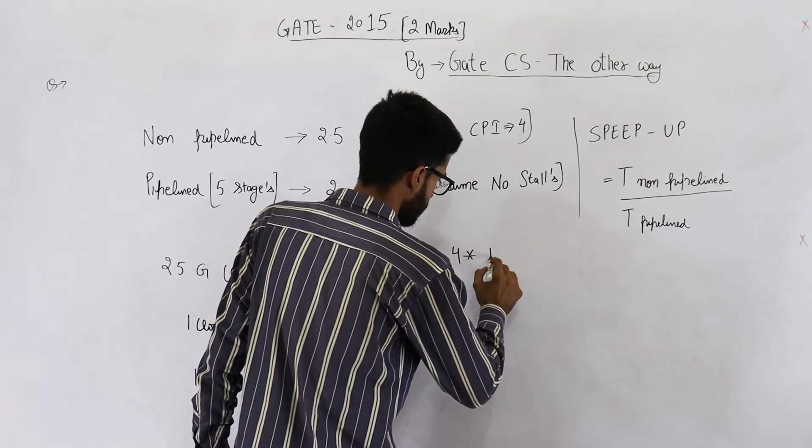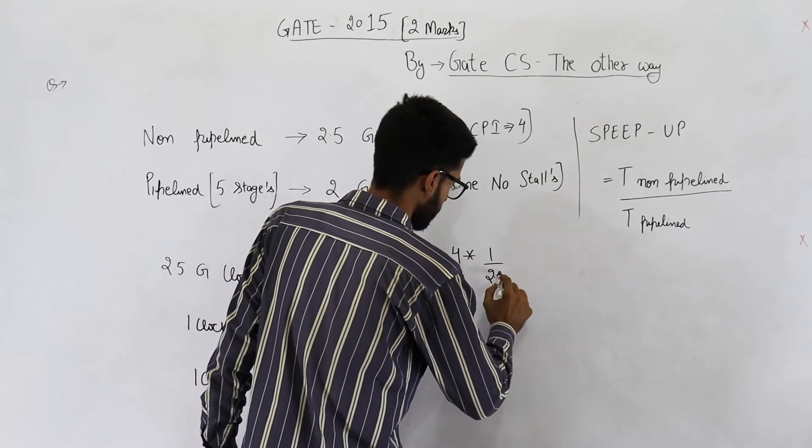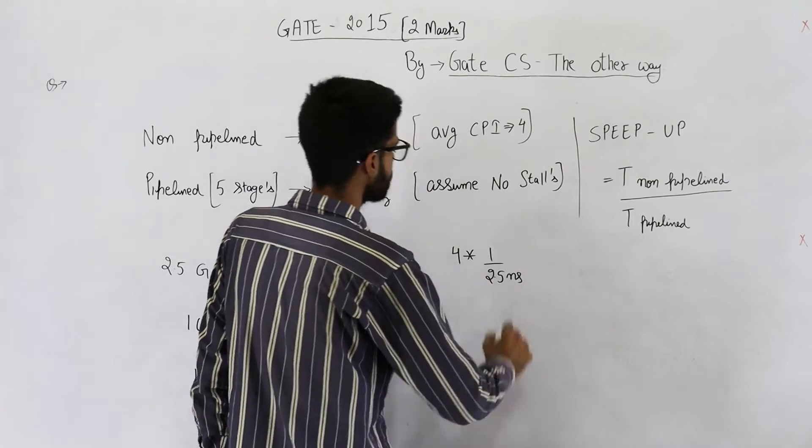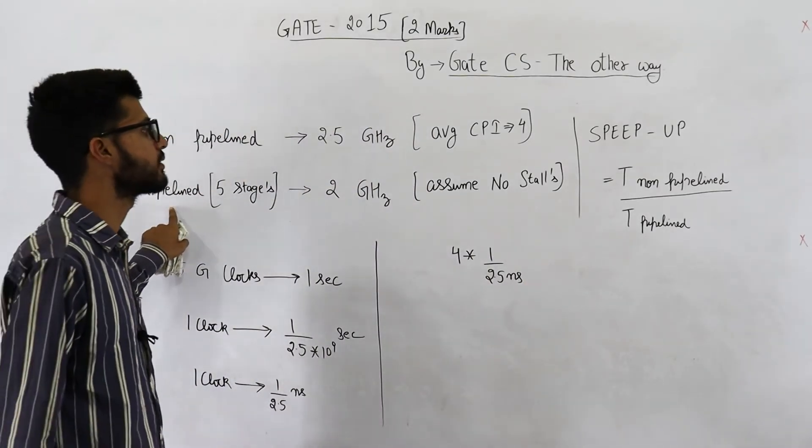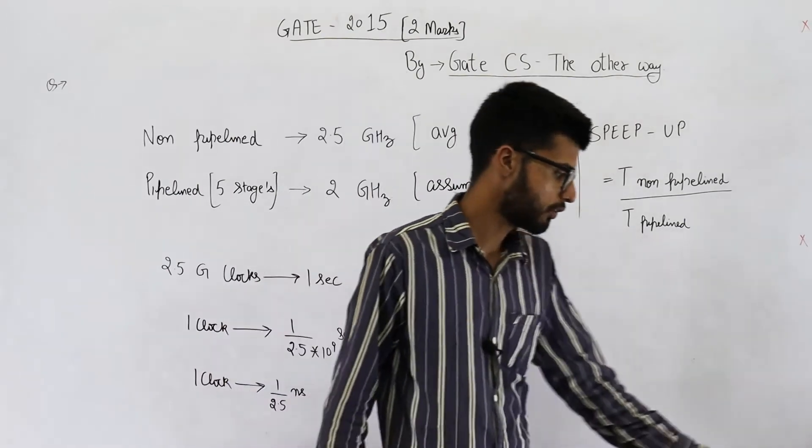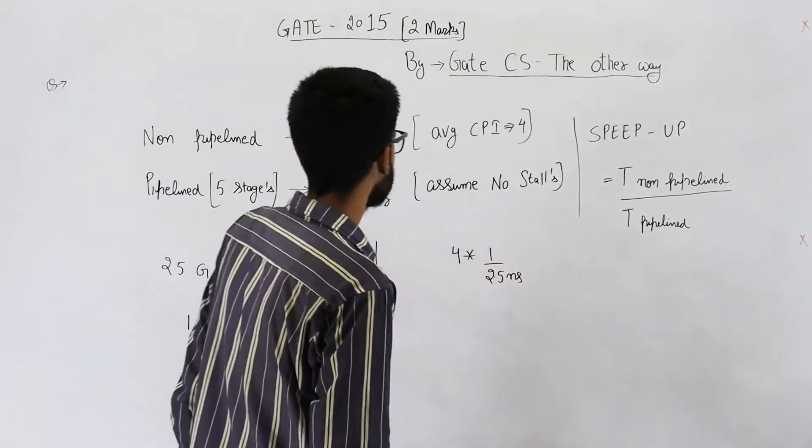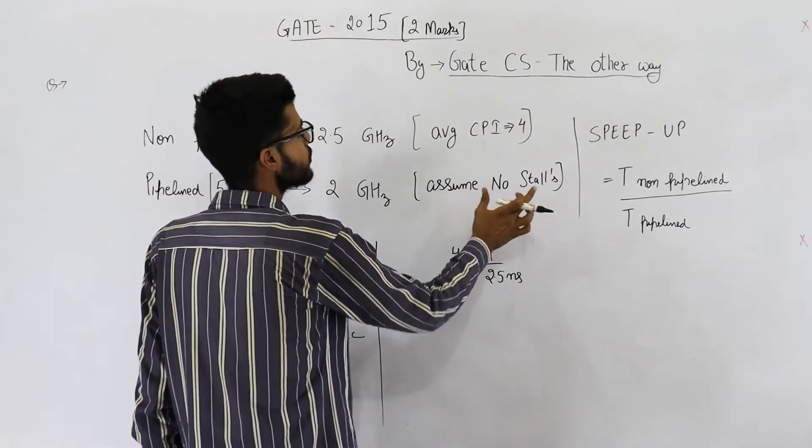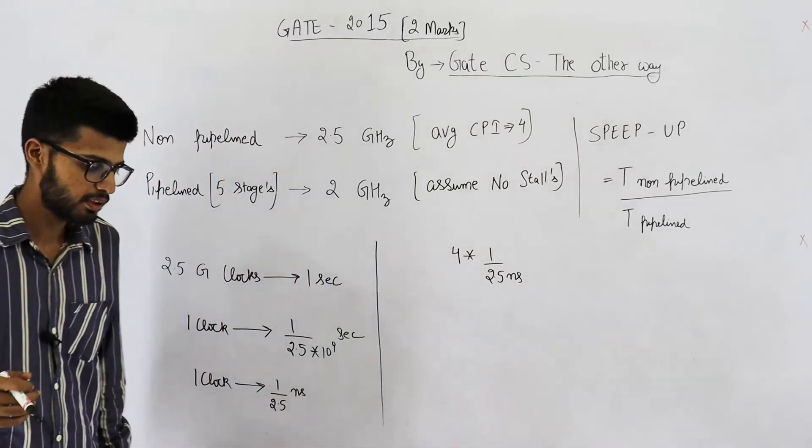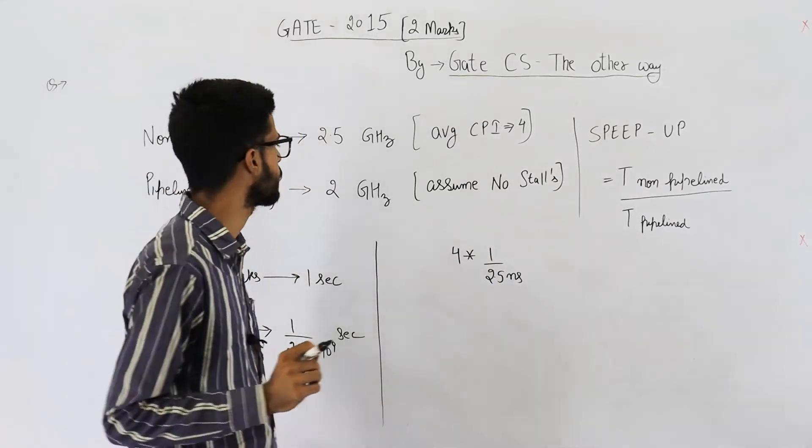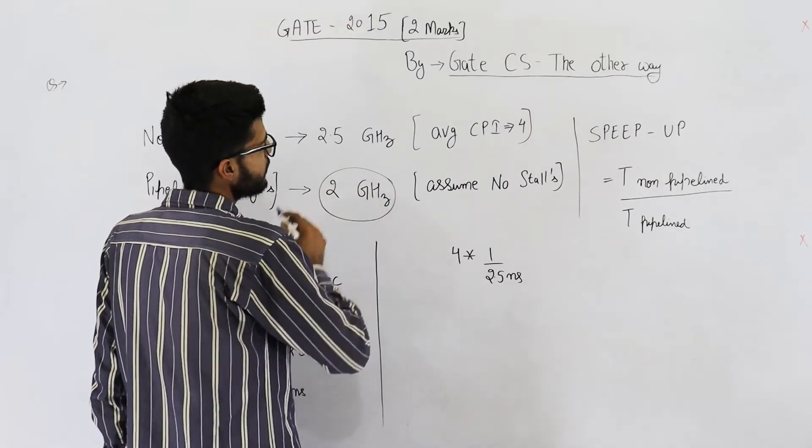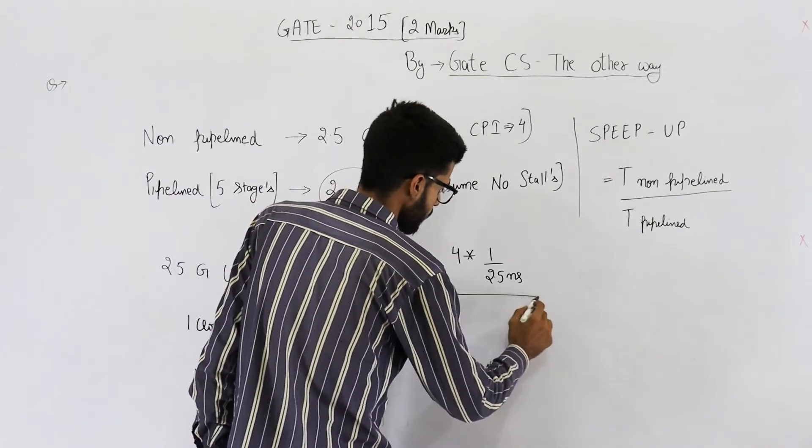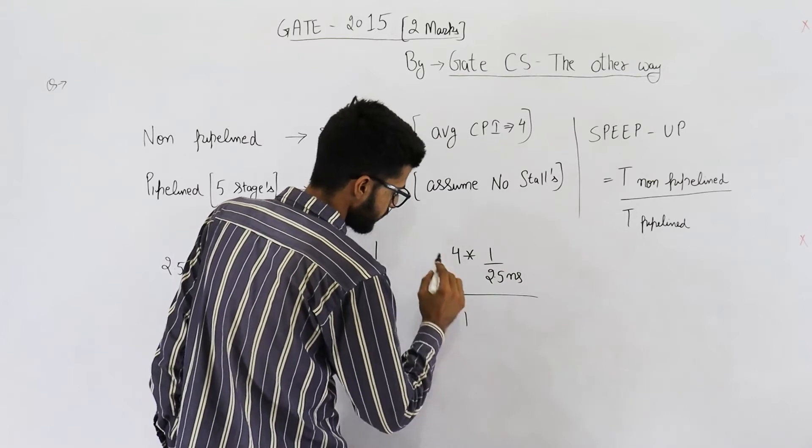4 multiplied by 1 upon 2.5 nanoseconds. Similarly, here the average CPI can be assumed to be 1. Because, they are saying assume no stalls are there in the pipeline. So, you can easily say average CPI is 1. And, frequency is given as 2 GHz. So, average CPI, in this case is 1.